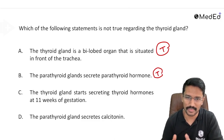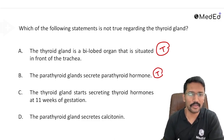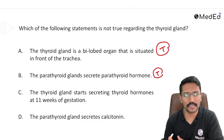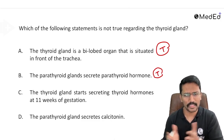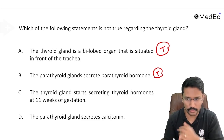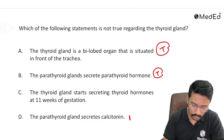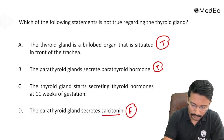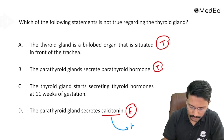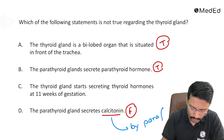The third point: the thyroid gland starts secreting thyroid hormones at 11 weeks of gestation — that is also a true statement, and I'll come back to this. The fourth option states that the parathyroid gland secretes calcitonin — we know that is a false statement, because calcitonin is secreted by the parafollicular cells, not the parathyroid gland.